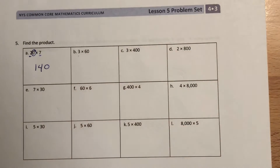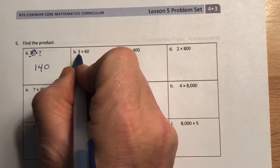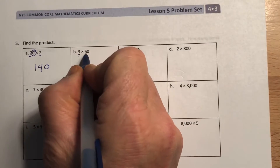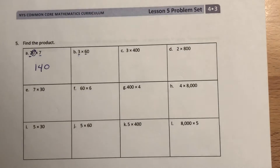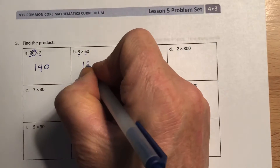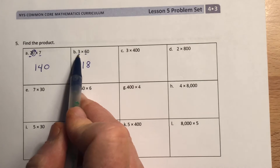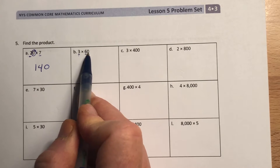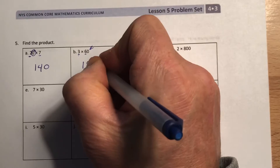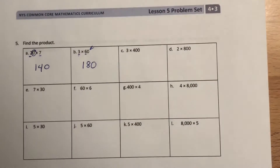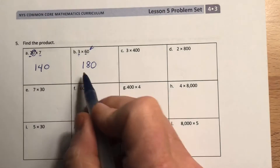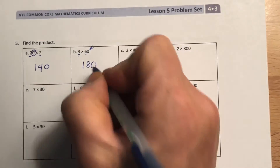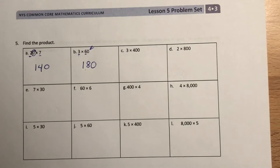Let's try the next one: 3 times 60. If I just do 3 times 6, remember your place value chart, that would be 18. But it's not just 3 times 6 — it's 3 times 60, that's a ten. So I have to put a zero at the end to make sure that represents tens. 18 tens — that's 180. If you follow these patterns all the way through, you'll have a lot of success.